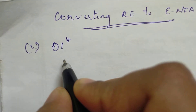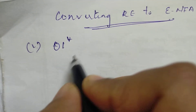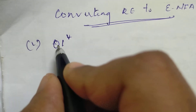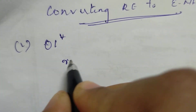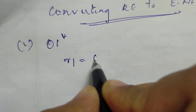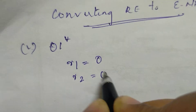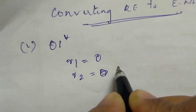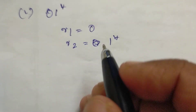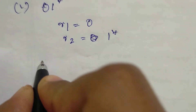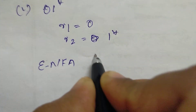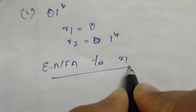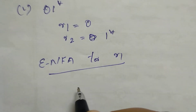Let's write R1 plus R2, or R1 dot R2. This is 0 dot 1 star. So R1 equals 0, R2 equals 1 star. Now we build the Epsilon NFA for R1.